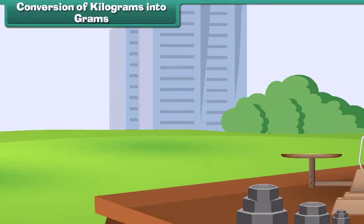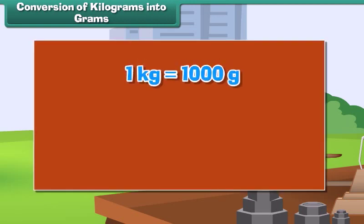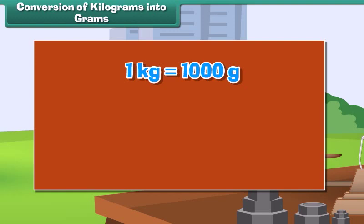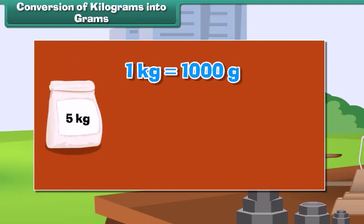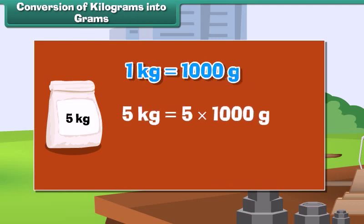Conversion of kilograms into grams: 1 kilogram is equal to 1000 grams. Therefore, the weight of a 5 kg rice bag can be calculated as: 5 kg is equal to 5 into 1000 grams, which equals 5000 grams.